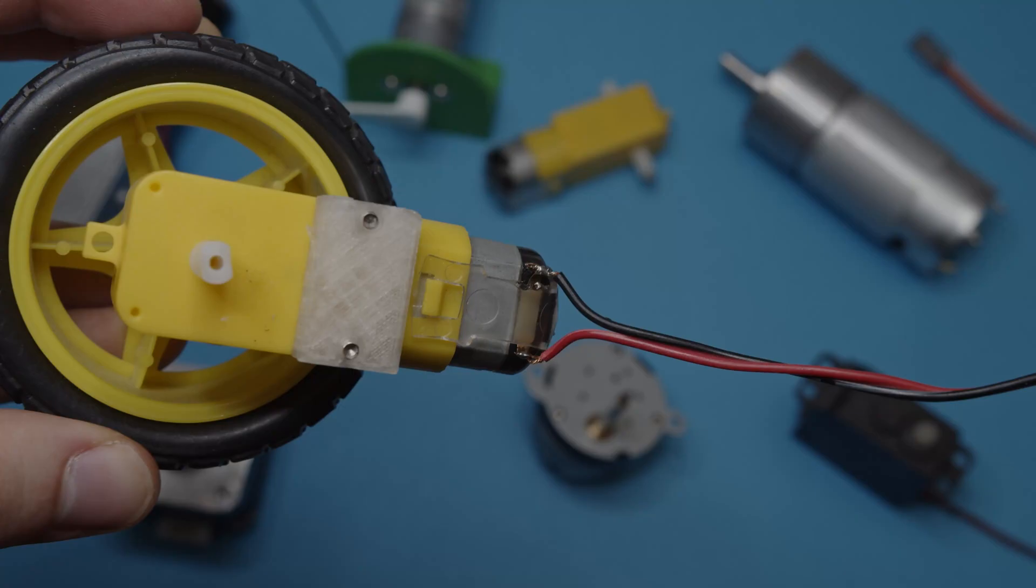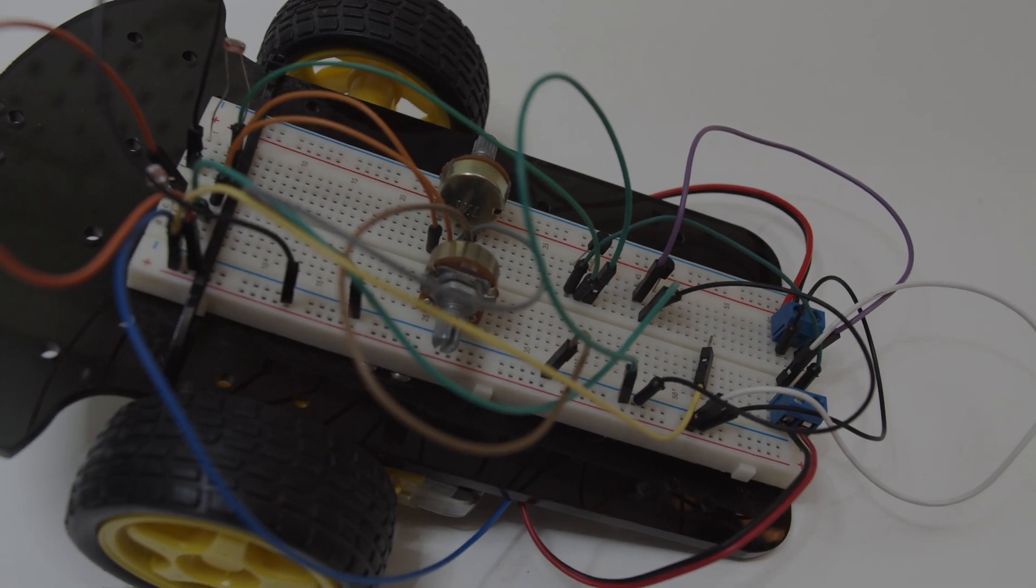The only thing that you may need to solder are motor cables, you can do everything else without soldering. And that's how you build a robot in 1 minute. Check out links in the description to learn more about all the topics I mentioned.